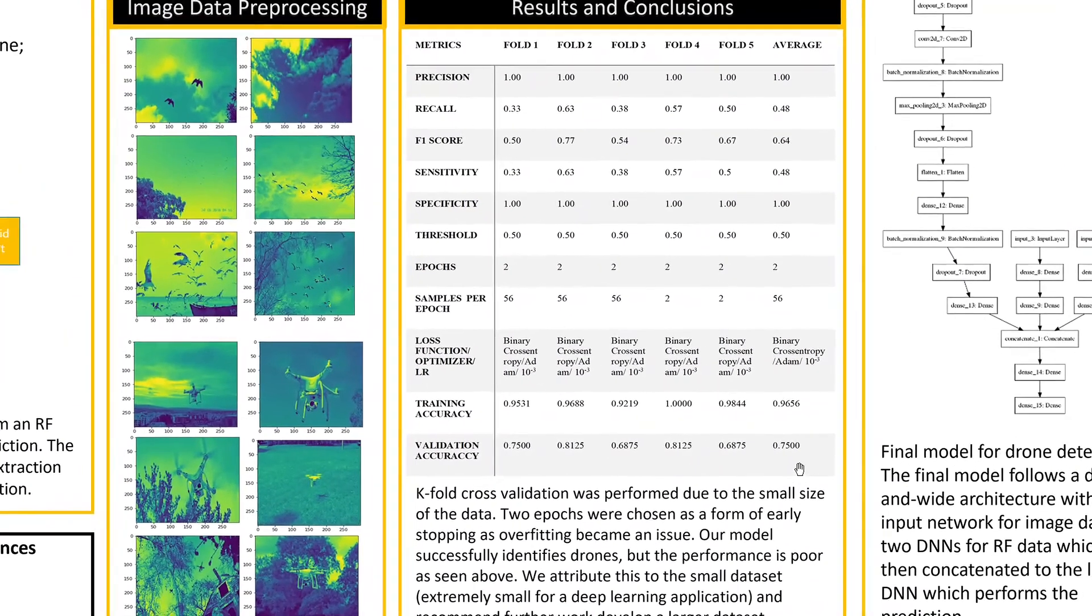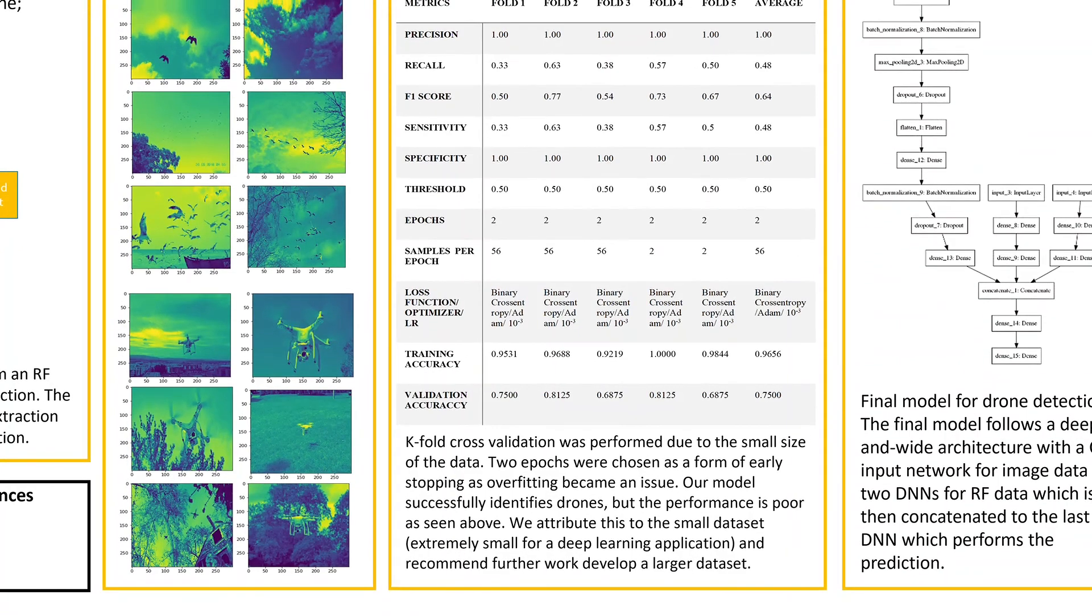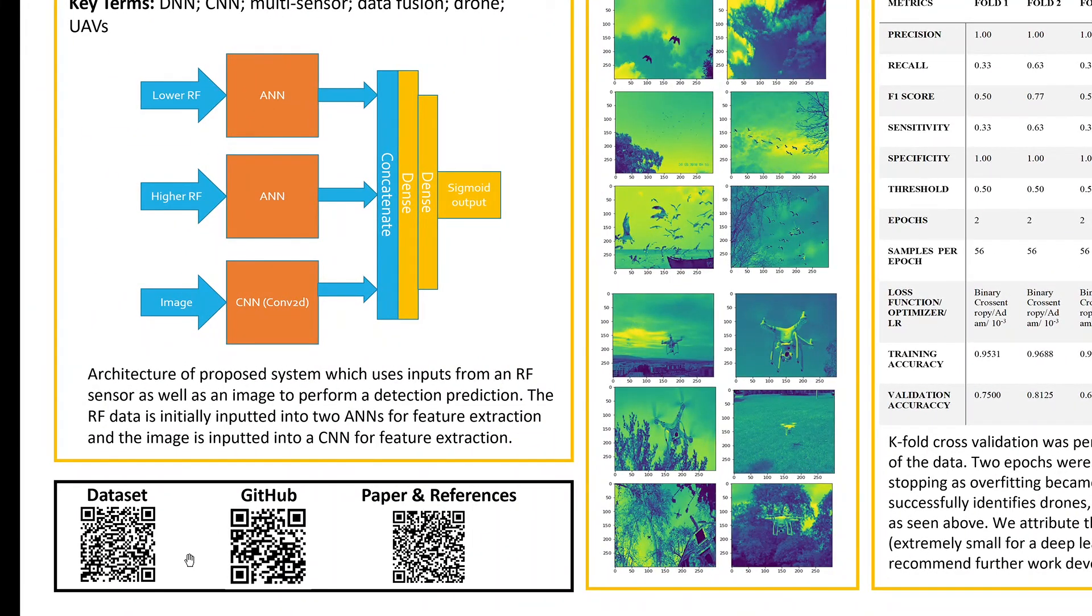Right now our model, as you can see, has average validation accuracy of 75 percent. Nonetheless, we think that this can definitely be improved. Our code as well as papers can be found here, and that'll end this presentation. Thank you.